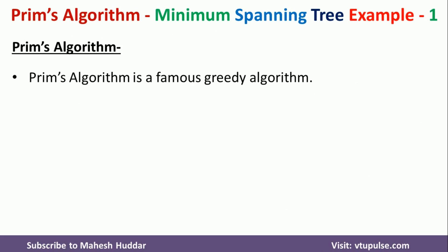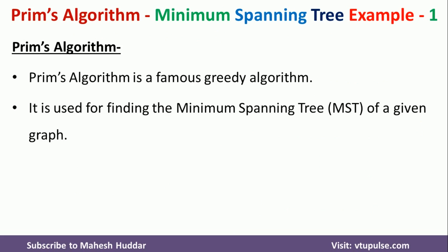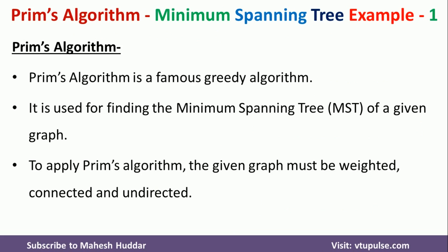Prim's algorithm is a famous greedy algorithm. It is used to find the minimum spanning tree for a given graph, but the graph should be weighted, connected, and undirected. If the graph is weighted, connected, and undirected, we can find the minimum spanning tree using Prim's algorithm.